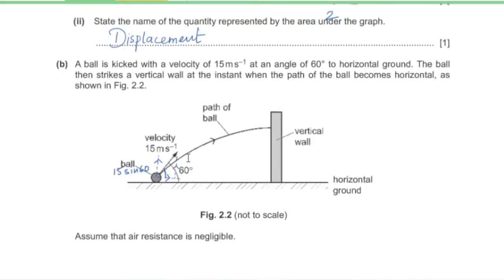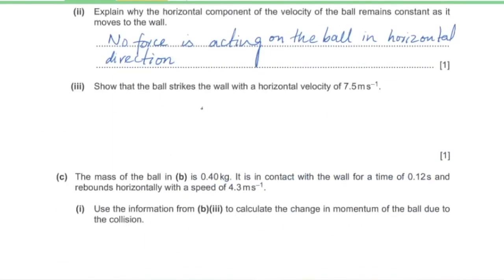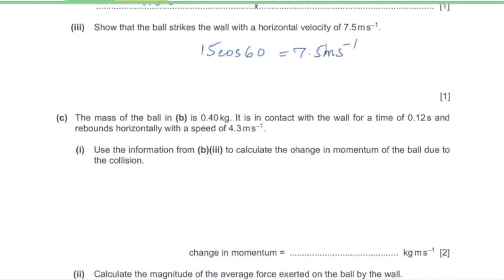Part 3: show that the ball strikes the wall with a horizontal velocity of 7.5 m/s. Since the horizontal component remains constant, the horizontal velocity equals 15 cos 60°, which equals 7.5 m/s.